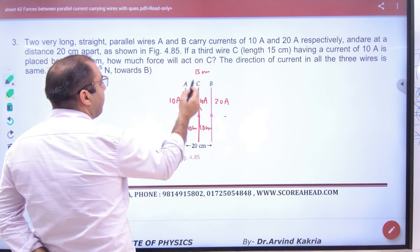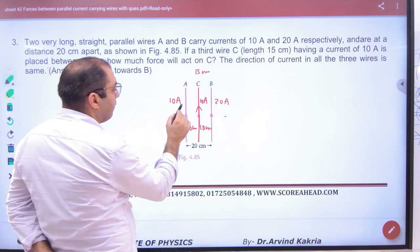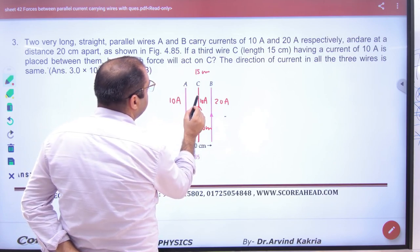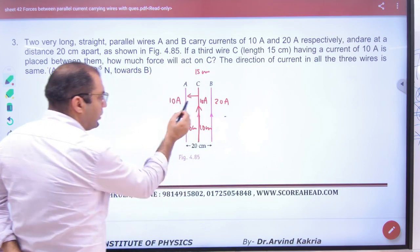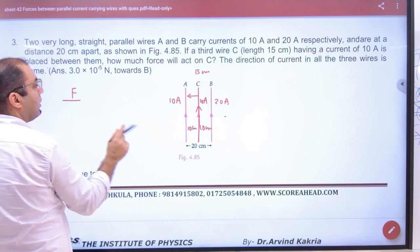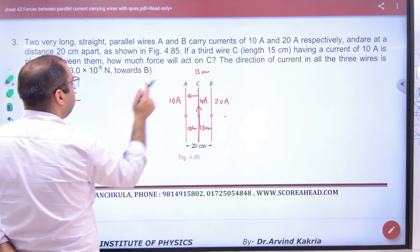So you have to find the force on C. First of all, these two current carrying wires both carry current in the same direction, so attraction will be. So what will AC do? Attract. So force, how much is C? 15 centimeter.